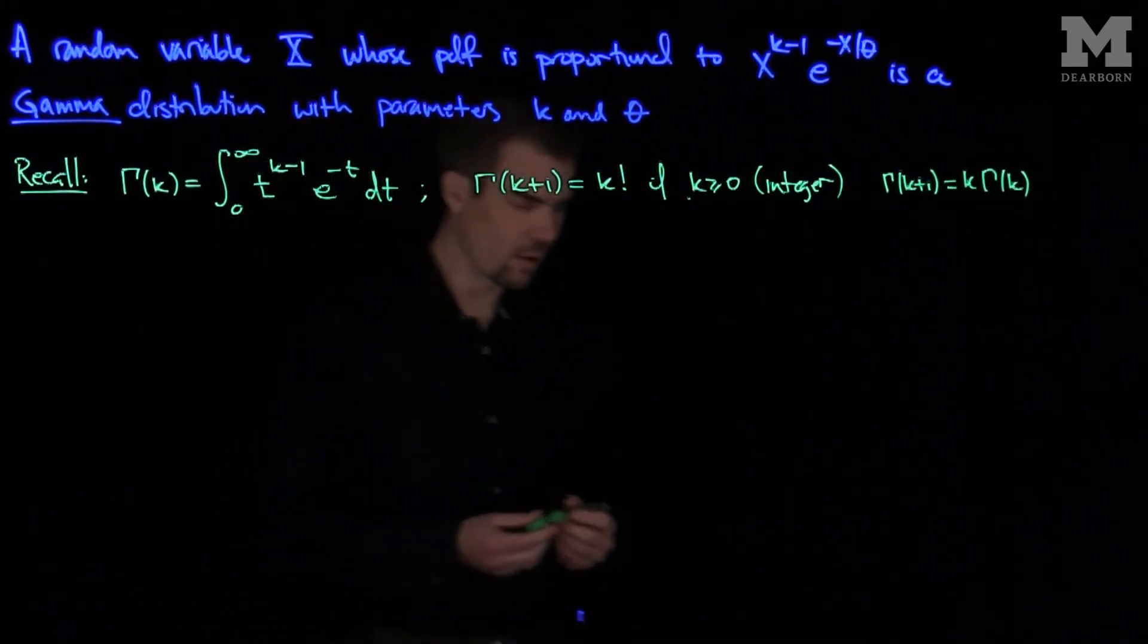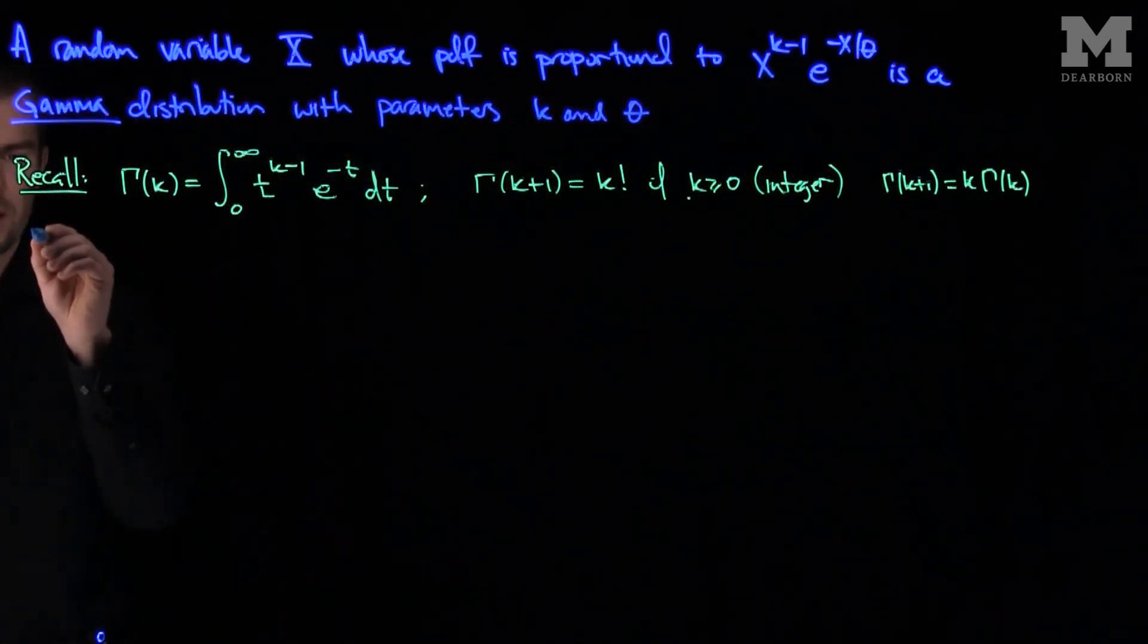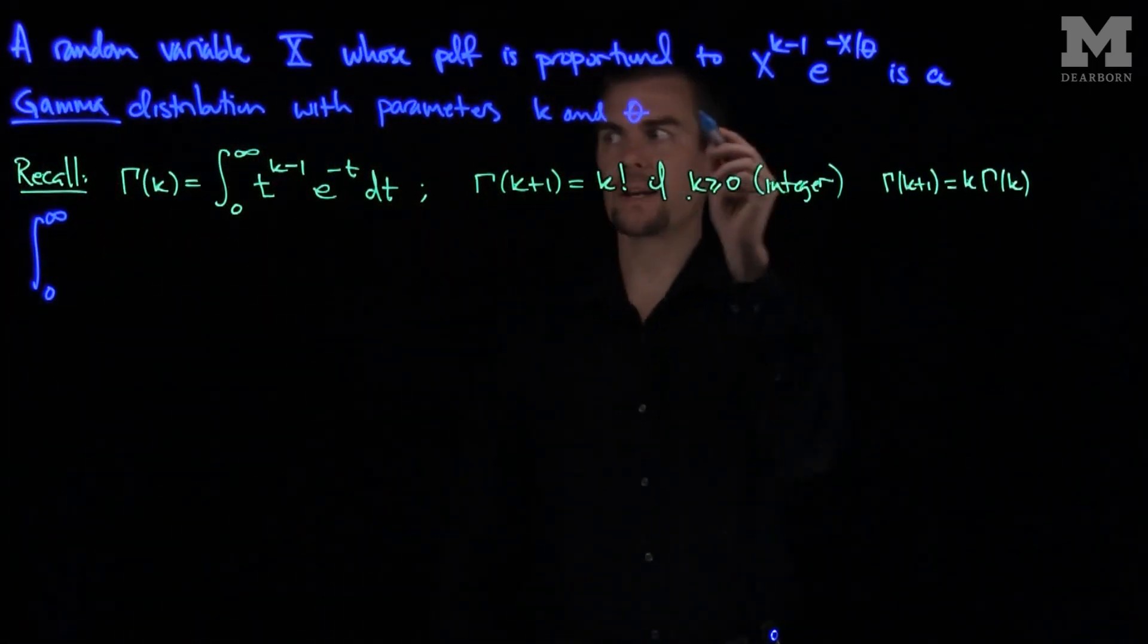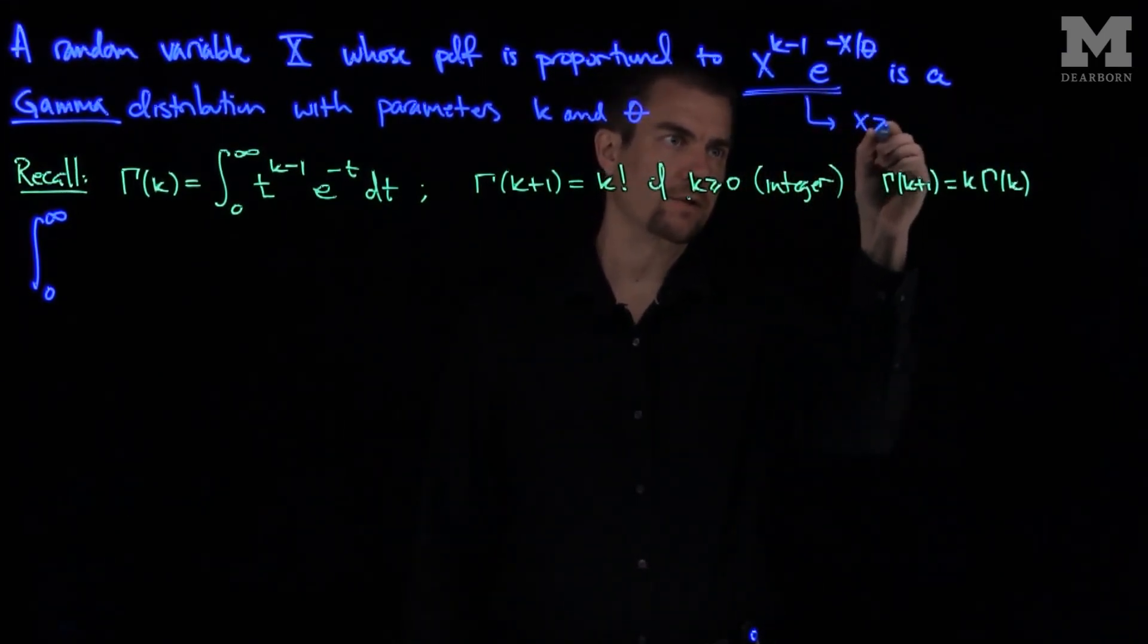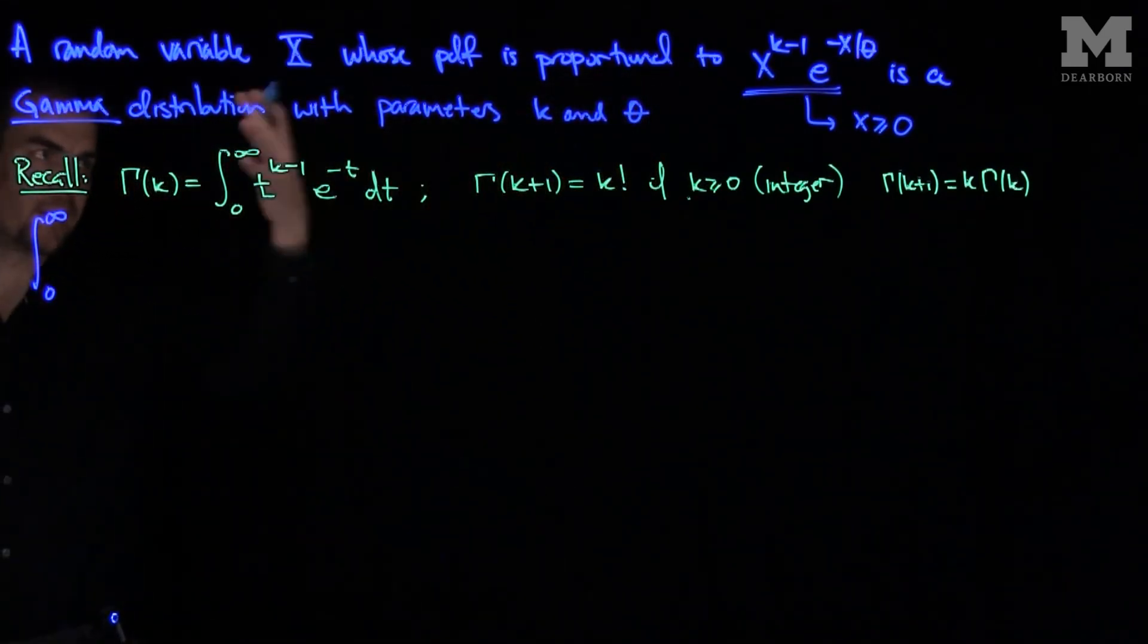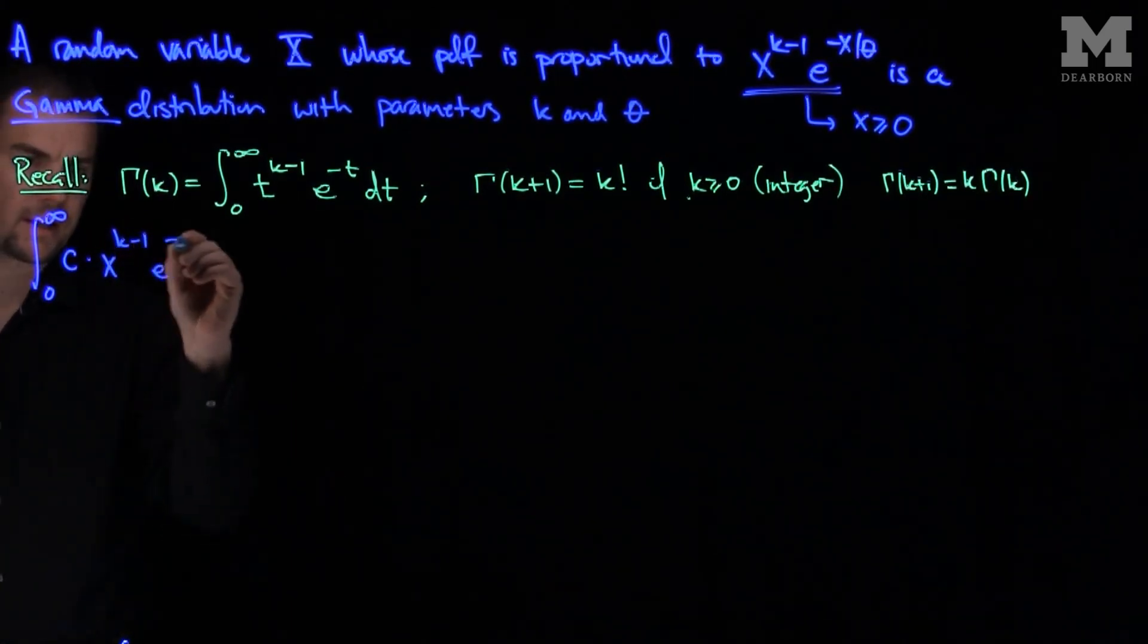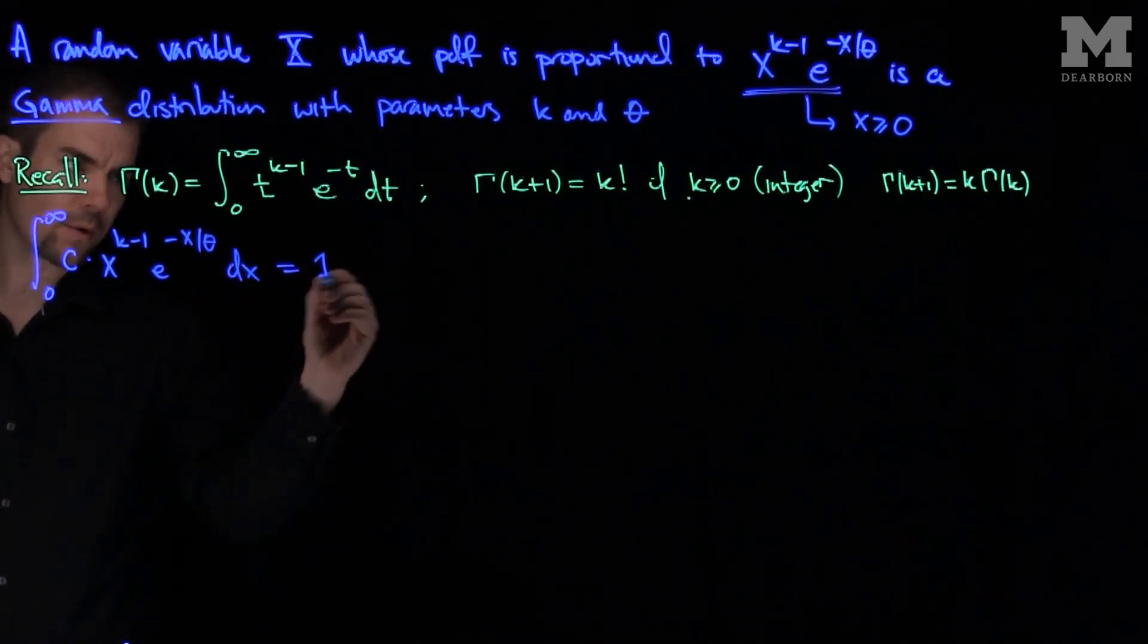And so with this in store, what we can do is find this constant of proportionality. So what we have is we want to find the integral from 0 to infinity. And we should specify, of course, that this is the PDF if, and the support of this PDF is only valid if x is greater than or equal to 0. And otherwise the PDF is 0. So if we integrate from 0 to infinity, we need to find a constant c such that x to the k minus 1, e to the negative x over theta, dx is equal to 1.